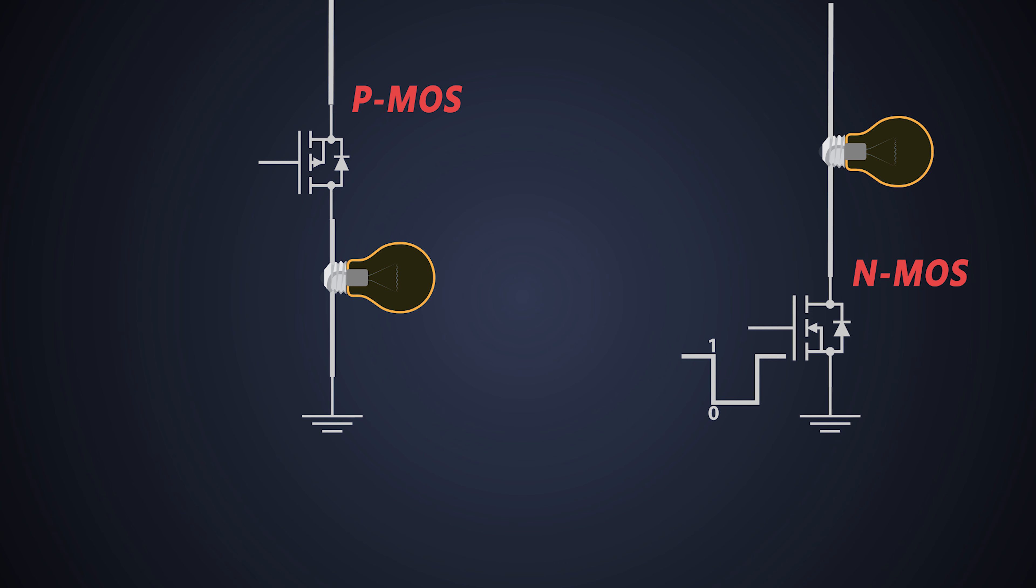Just opposite of that happens with the p-channel MOSFET. When the positive gate voltage is applied to the p-channel MOSFET across the gate and source, the MOSFET turns OFF. And when the gate is connected to ground, then the MOSFET is turned ON.